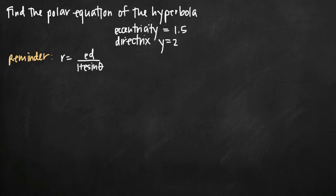Now the only difficult thing about this problem is figuring out which formula to use for the equation of the hyperbola. That's determined completely by the equation of the directrix. If the equation of the directrix is y equals a positive constant, then we're going to be using the formula r equals e times d divided by the quantity 1 plus e sine theta, where e is eccentricity and d is the directrix.